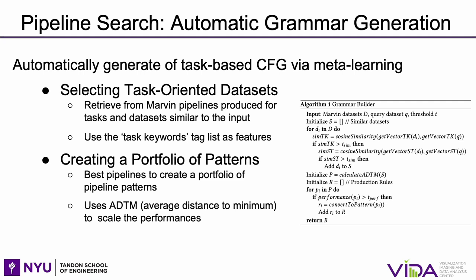Instead of relying on manually created context-free grammars, we propose a new strategy that uses meta-learning over the Marvin database to automatically create grammars on the fly. It does so in two steps: first, it selects task-specific pipelines and datasets; and second, it uses these to create a portfolio of pipeline patterns. Since AlphaD3M supports different tasks, we need to retrieve from Marvin the pipelines produced for tasks and datasets similar to the ones provided as inputs to the automatic system.